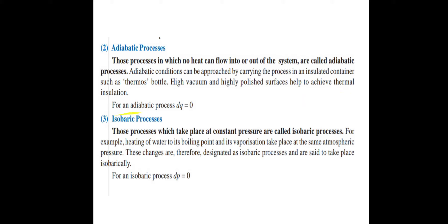For an adiabatic process, ΔQ is equal to 0. ΔQ is the change in heat: if Q1 is the initial heat and Q2 is the final heat, then ΔQ = Q2 − Q1, which equals 0 because no heat can flow into or out of the system.